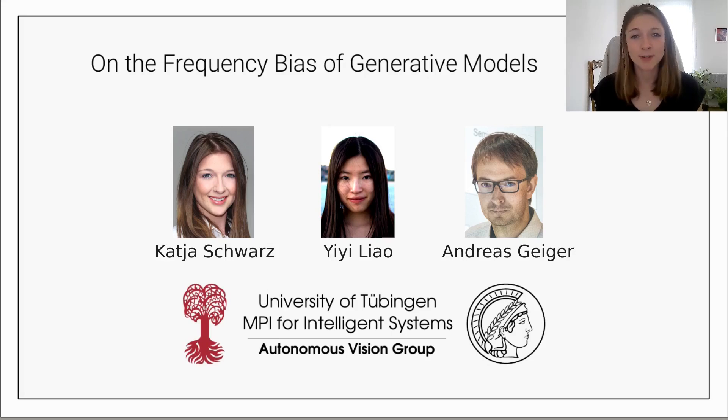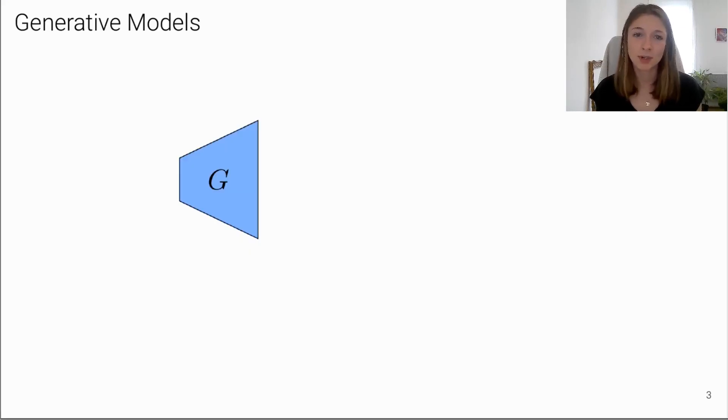Our session today will focus on generative adversarial networks, also called GANs. So let's start with a quick recap on generative adversarial networks for image synthesis. One key component is the generator, which is parametrized by a neural network. It takes random noise vectors as input and learns to map them to images.